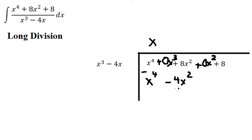8x squared minus negative 4x squared - negative and negative gives positive, so 8 plus 4 equals 12. And we put 8 here.